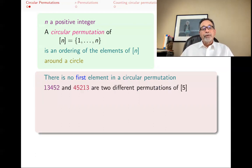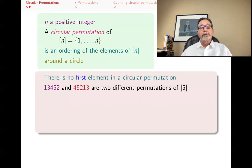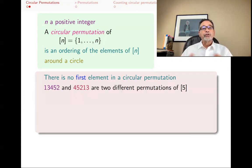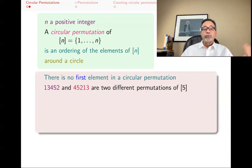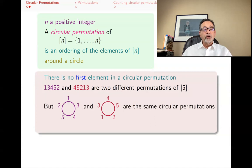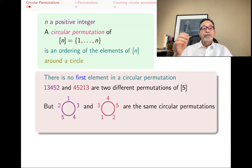For example, the linear permutations 1,3,4,5,2 and 4,5,2,1,3 are different permutations — not circular — of 1 through 5. One starts with 1, the other starts with 4. But if you write these around a circle, you notice that they're actually the same, because everyone is following the same one around.